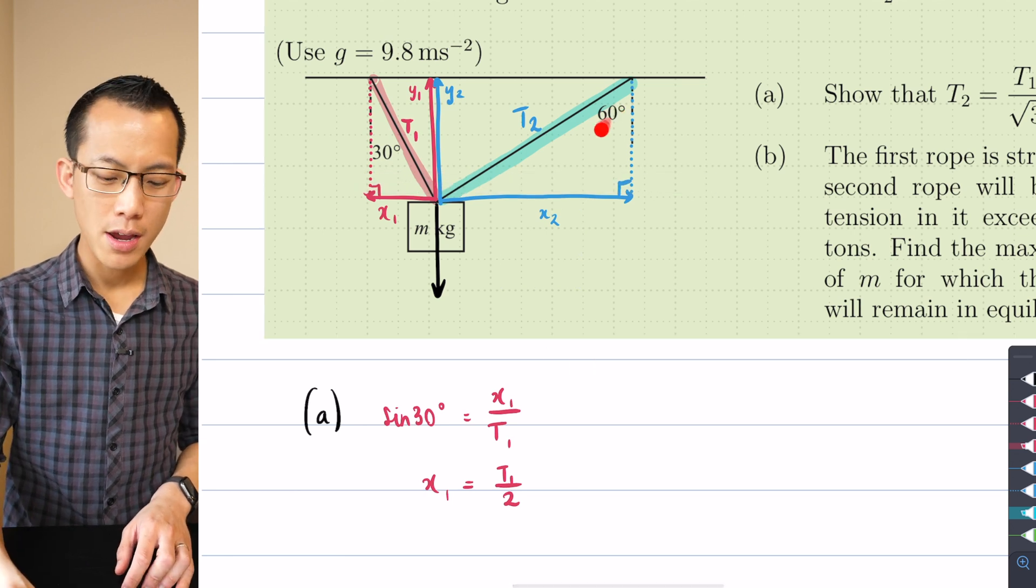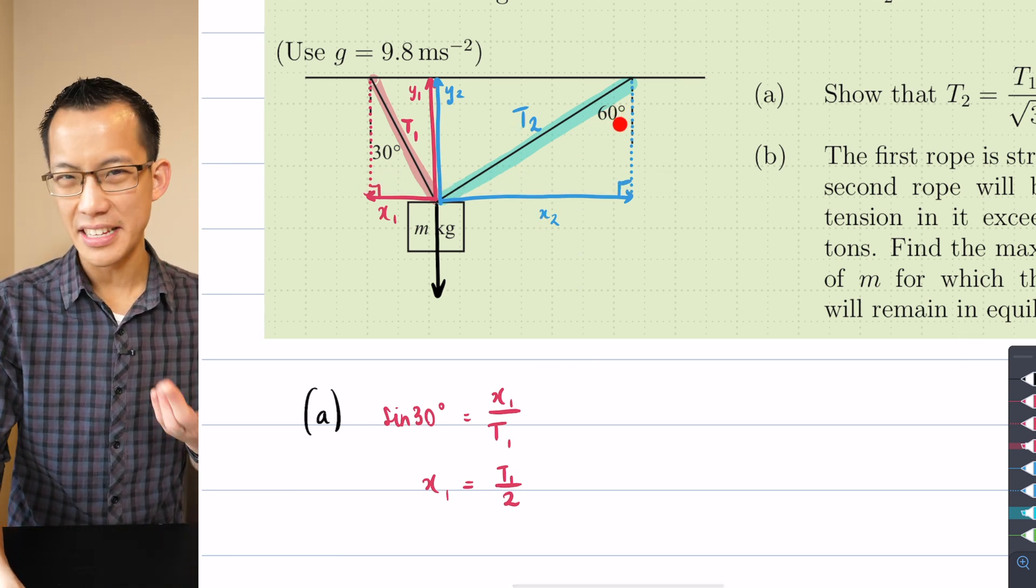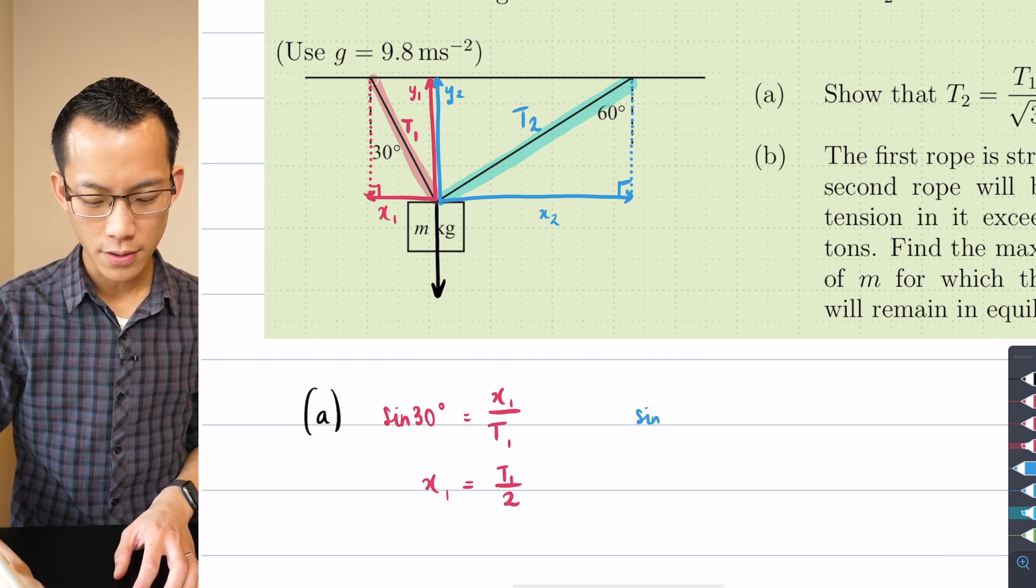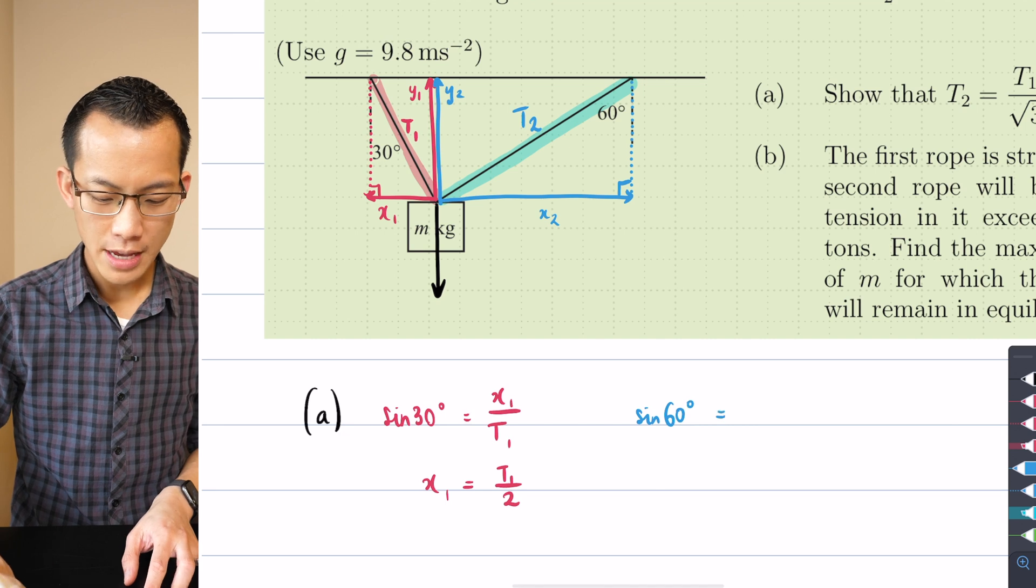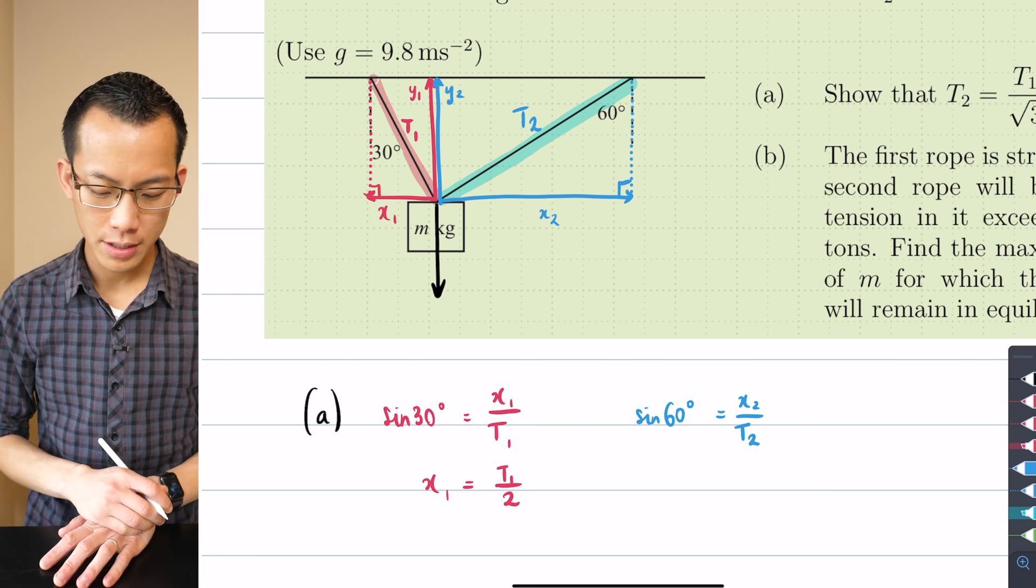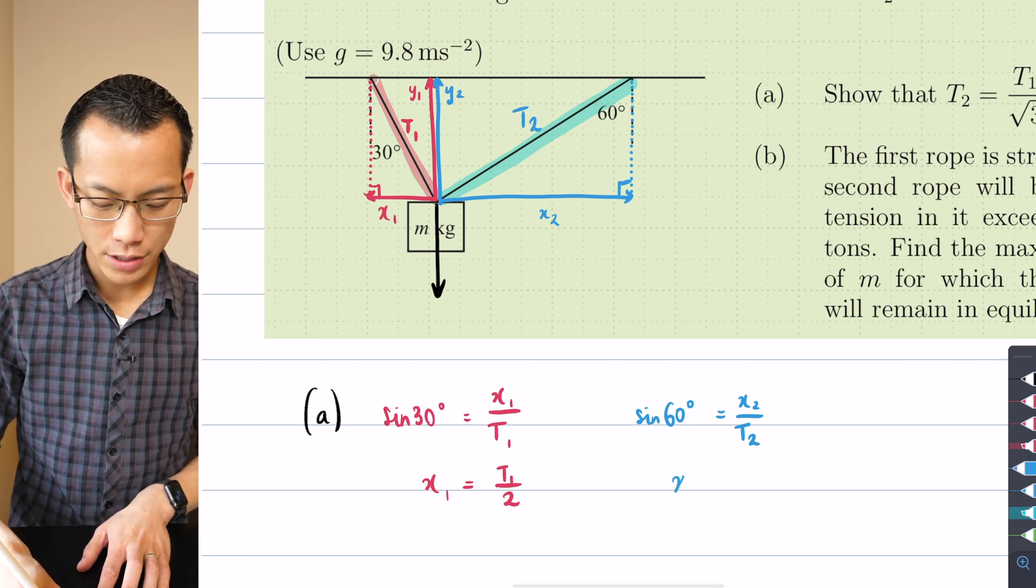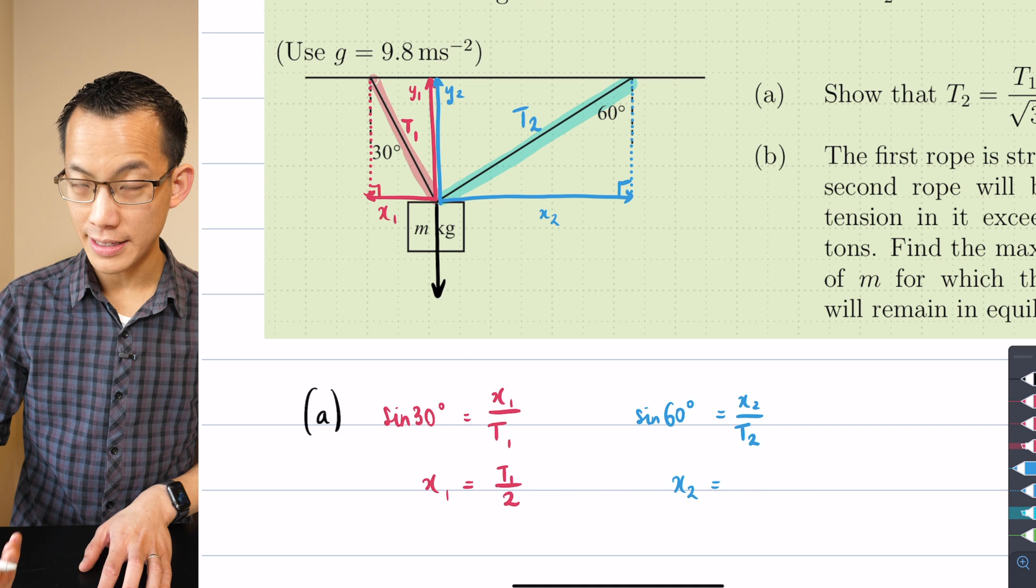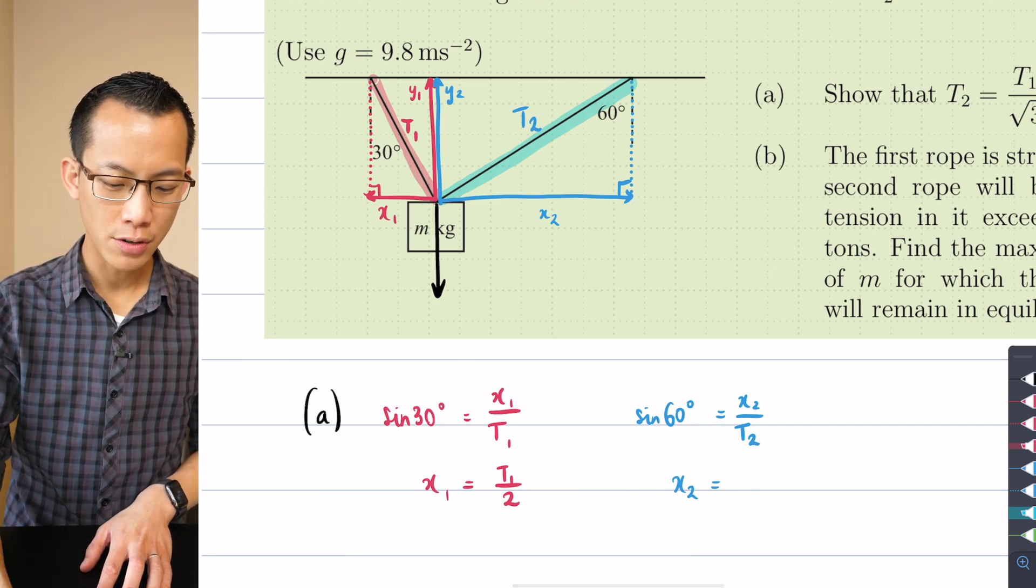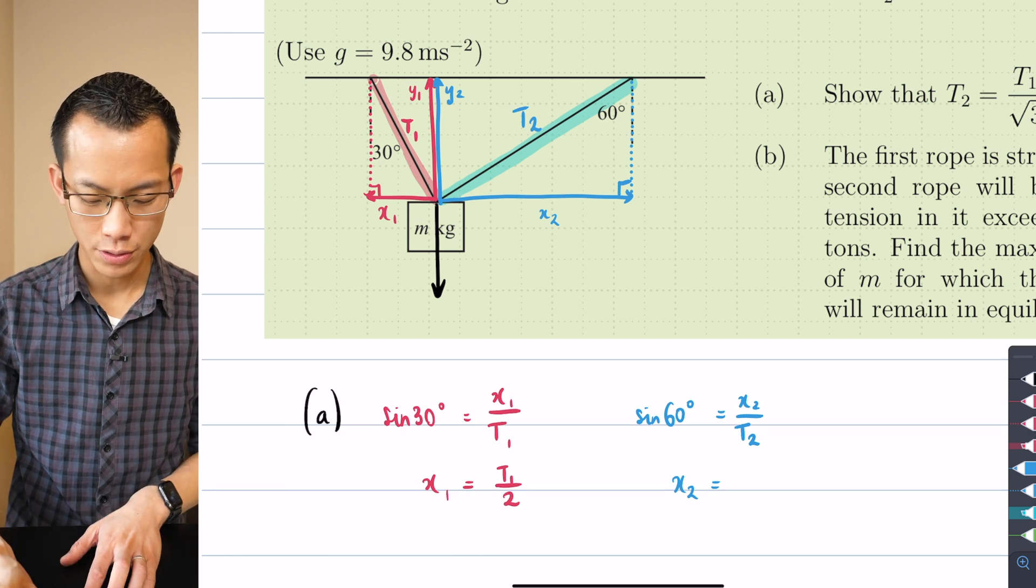In the same way it's going to be opposite on hypotenuse, it's just that it's a different angle, it's 60 degrees. Therefore I'm going to say sine of 60 degrees equals opposite on hypotenuse which is x2 on T2. Making x2 the subject I'll multiply T2 to the other side and I can also evaluate sine 60 degrees which is root 3 on 2, so that gives me root 3 on 2 T2.